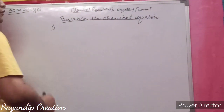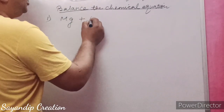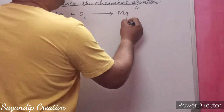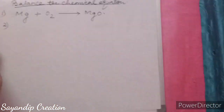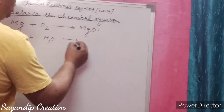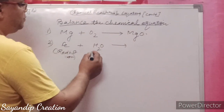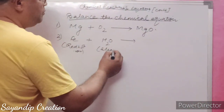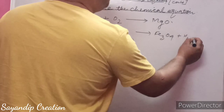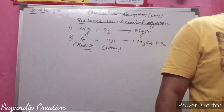The first one is a simple one: magnesium plus oxygen (Mg + O2). Another one is iron plus water. This is red-hot iron; when it is passed over steam it forms Fe3O4 plus H2. You have to balance it. I showed you in the previous class using the trial and error method.